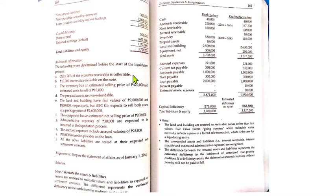Looking at the additional information: Item A states that only 76% of accounts receivable is collectible. Therefore, 220,000 × 76% = 167,200 is the realizable value of accounts receivable.